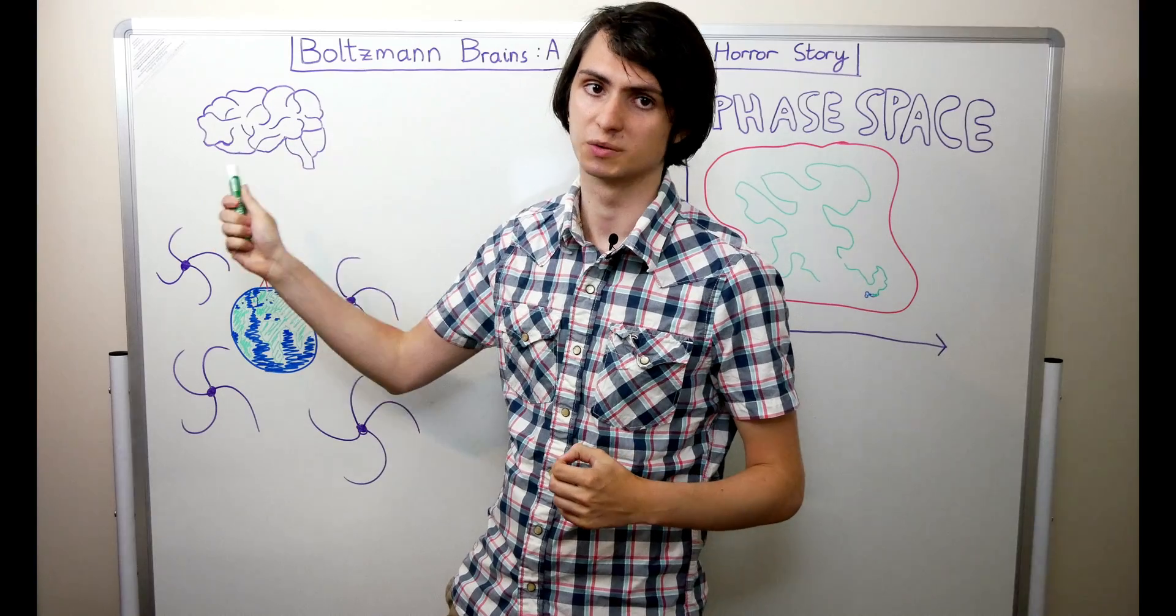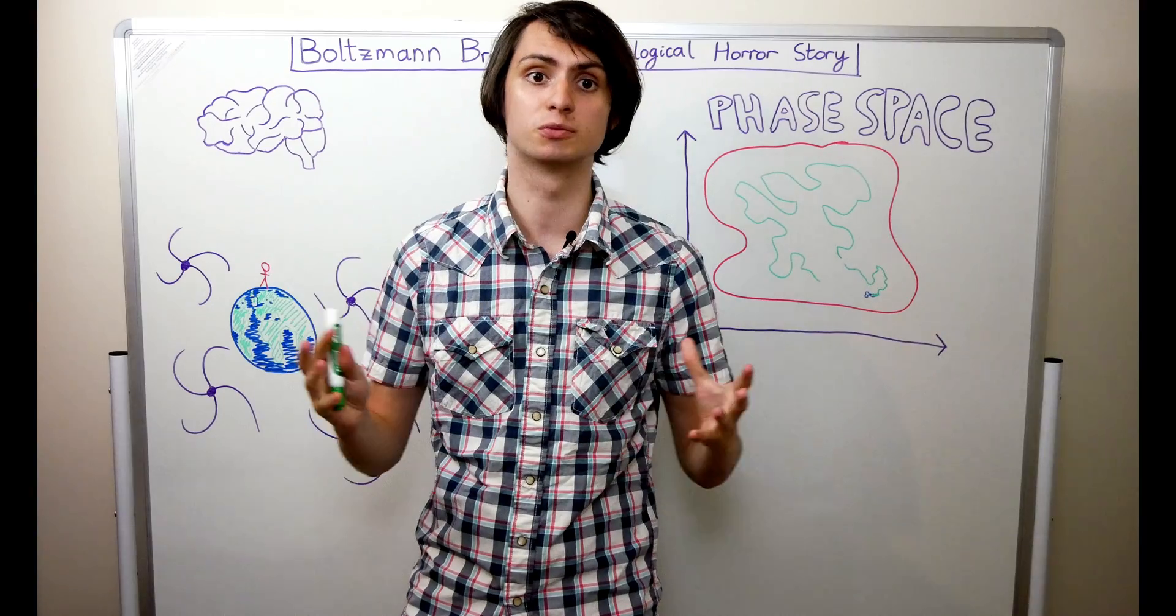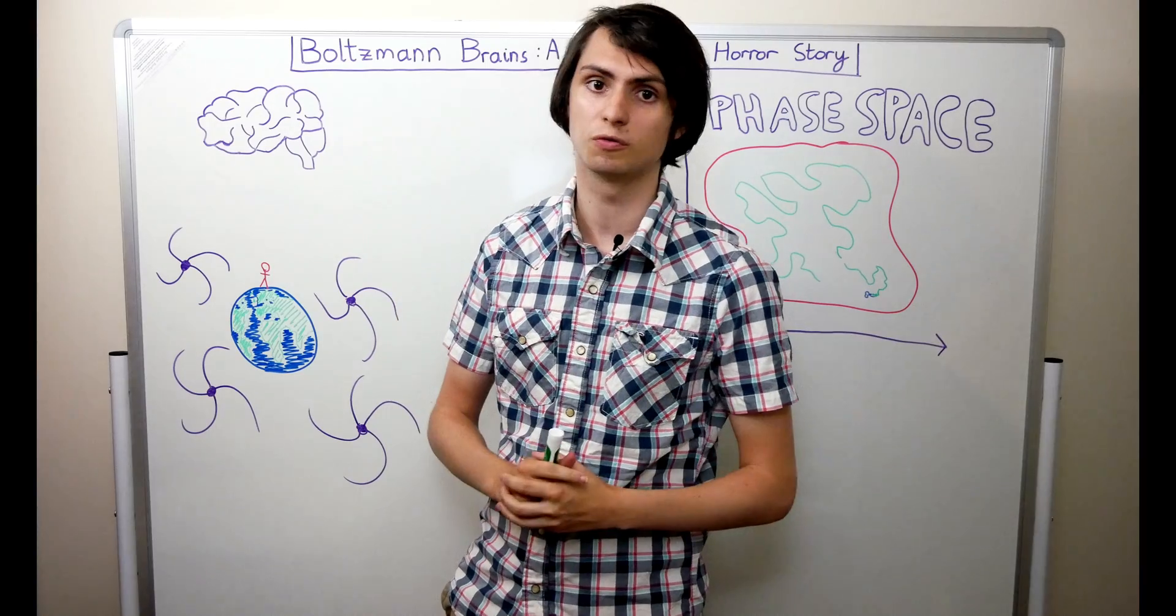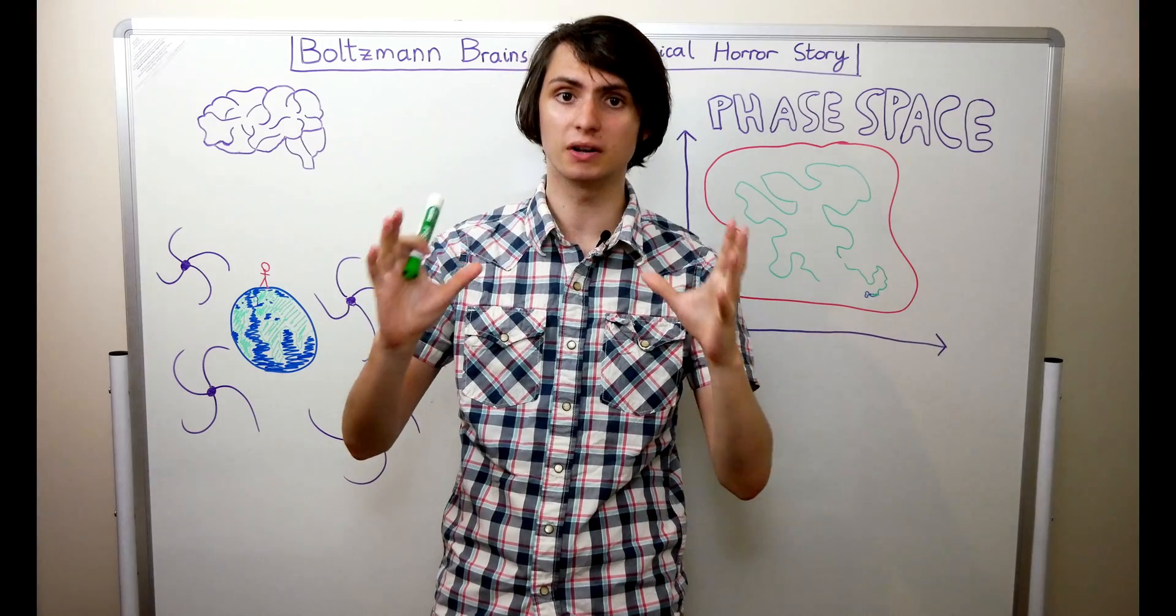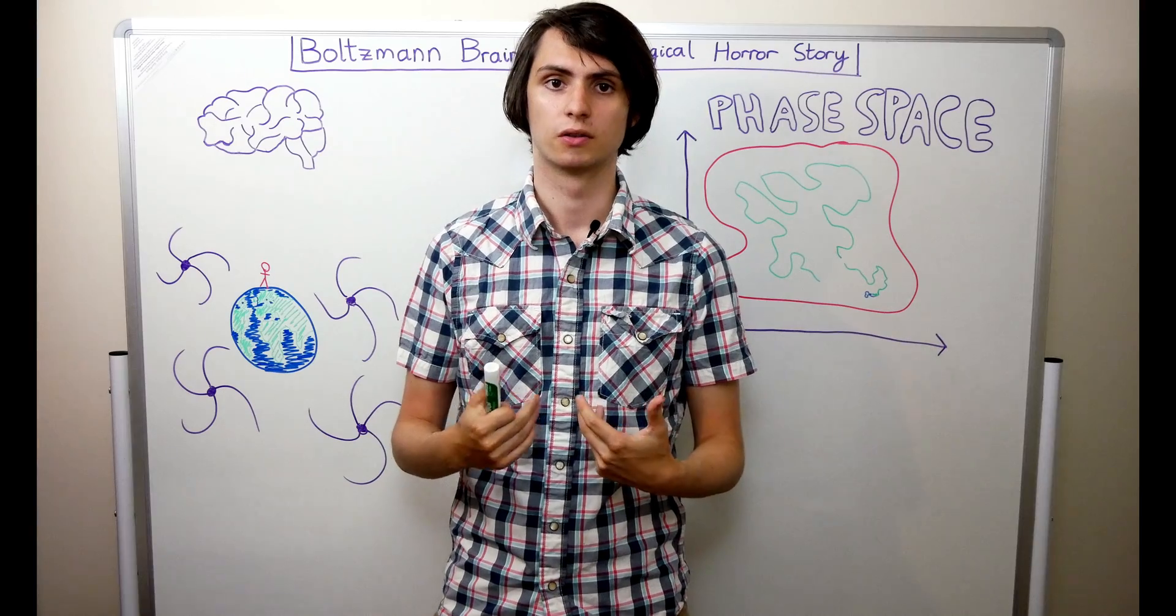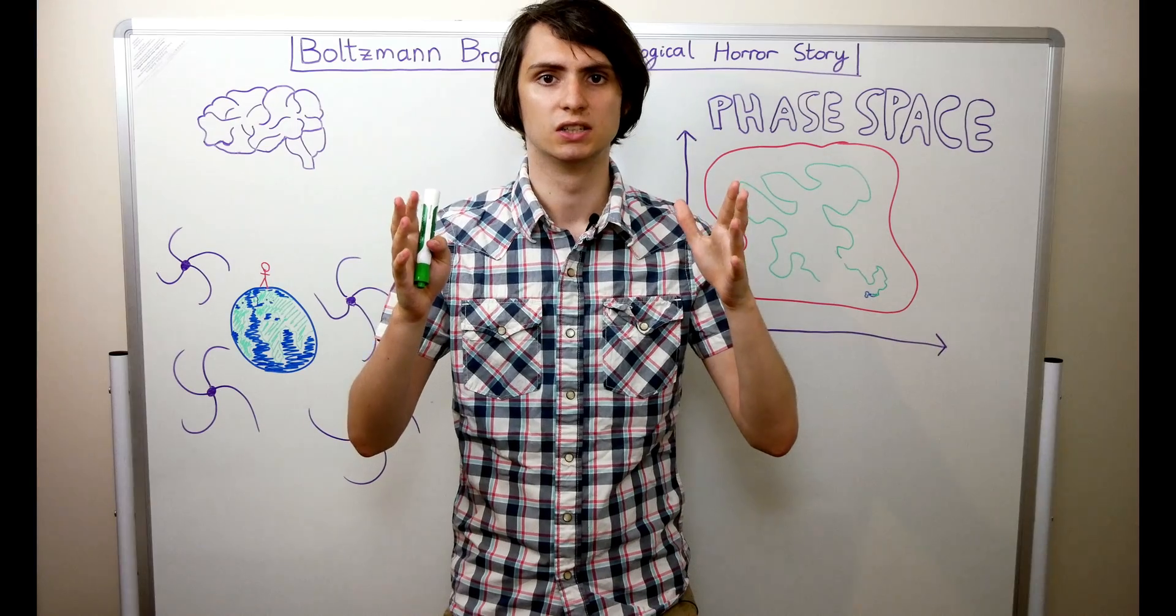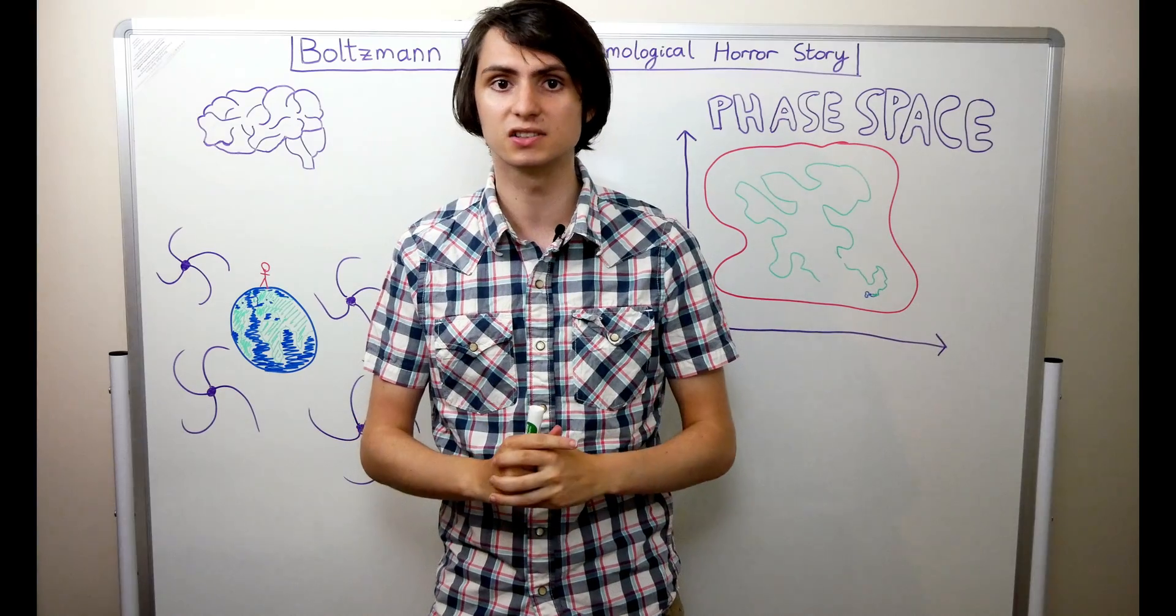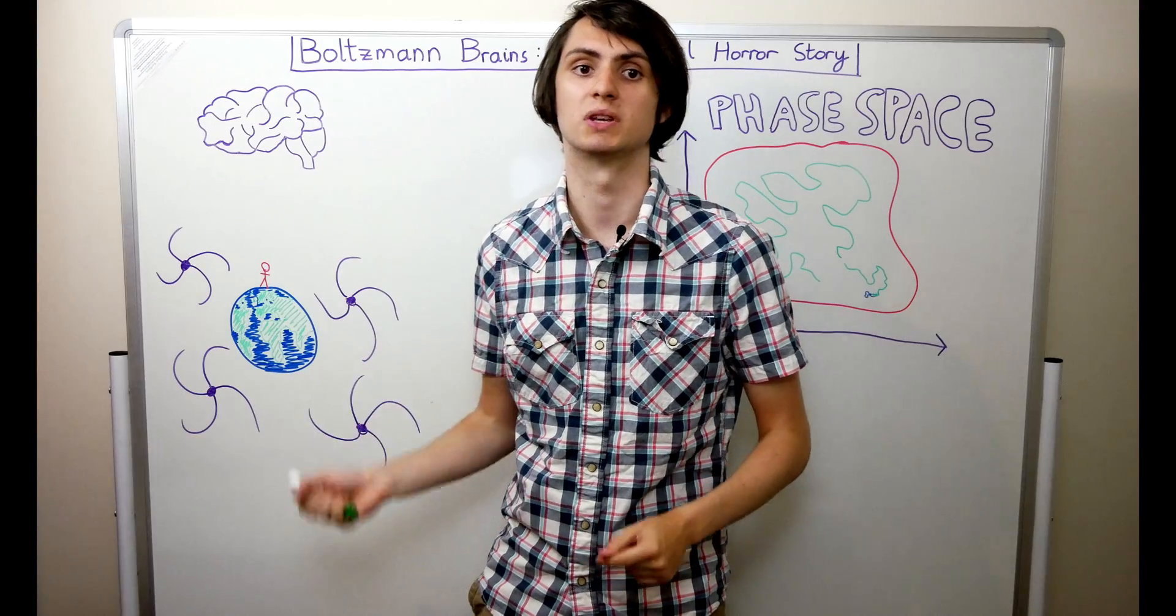This is what's known as a Boltzmann brain. A Boltzmann brain is an isolated brain complete with false memories of existing in a low entropy universe that forms as a statistical fluctuation in the void. If Boltzmann's idea was correct, then there would be infinitely more Boltzmann brains than observers in universes such as ours. The disturbing conclusion then is that if you take your experience at a single moment, you're infinitely more likely to be a Boltzmann brain falsely remembering your past than a conscious observer on a rocky planet in a large low entropy universe.